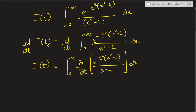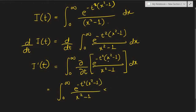Since there's only one argument for I(t), an ordinary derivative is enough — we don't need a partial derivative. On differentiation, using the chain rule, we get e raised to negative t squared times x squared minus 1, as is, divided by x squared minus 1, times negative 2t times x squared minus 1, and then dx. The best part is the denominator cancels with the x squared minus 1 term.